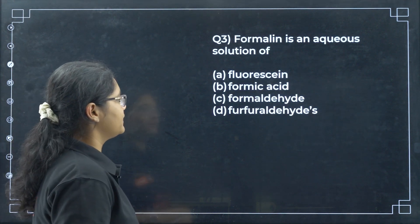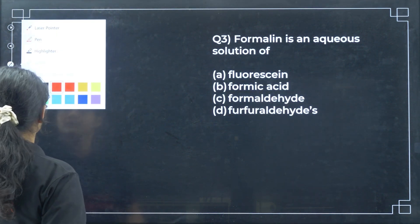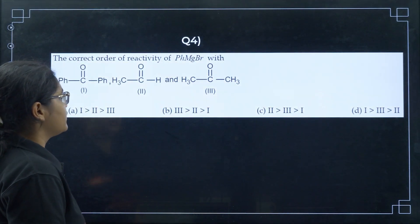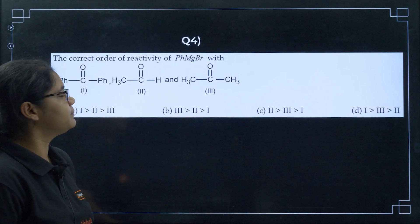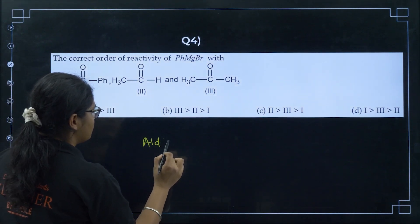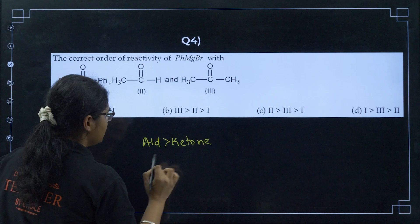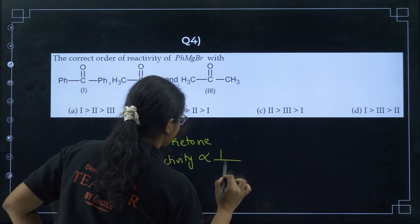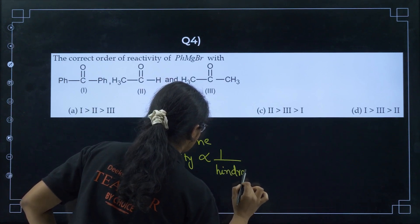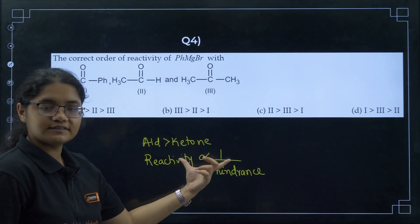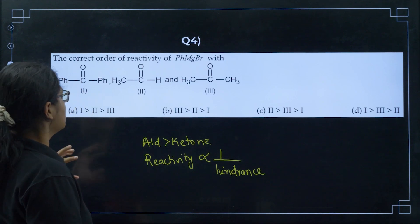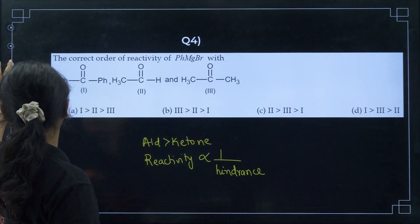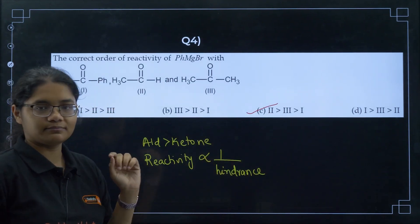Now next question: formalin is an aqueous solution of formaldehyde. Next, the correct order of reactivity of PhMgBr. You should always remember aldehydes are more reactive than ketones, and reactivity is inversely proportional to hindrance.